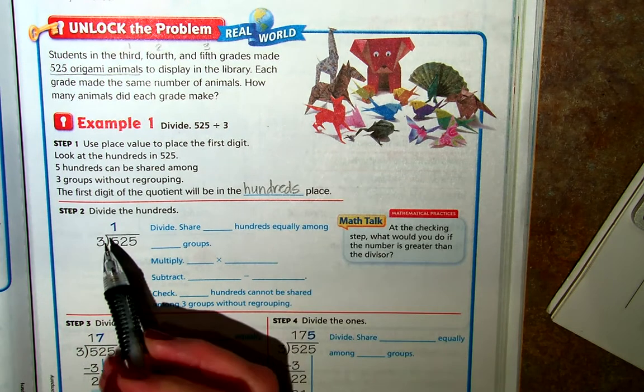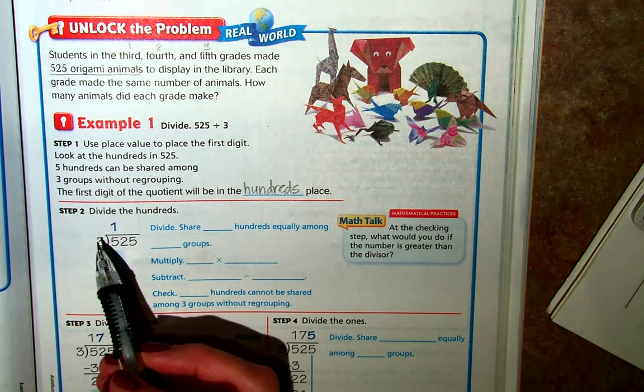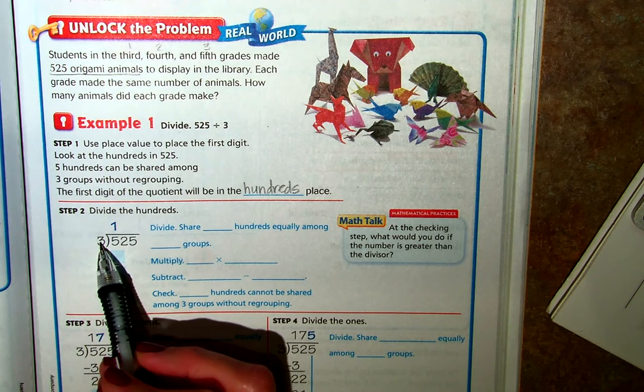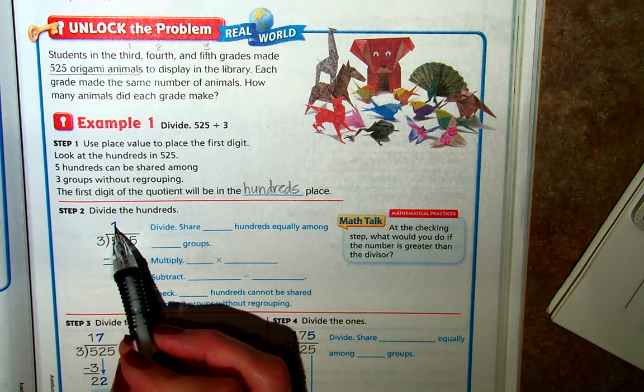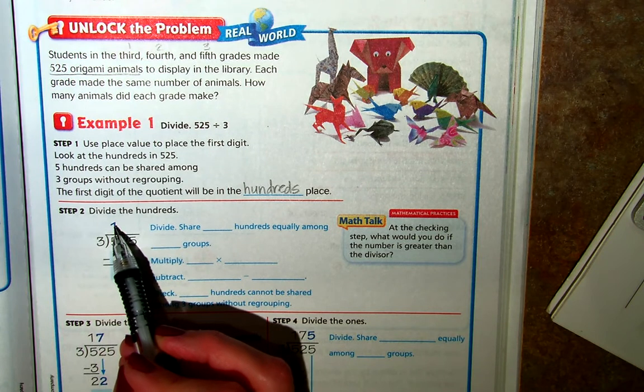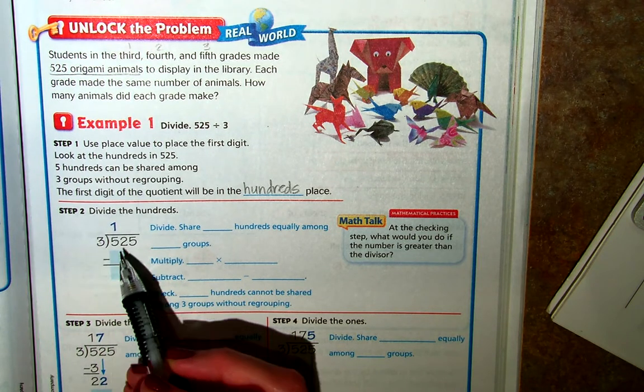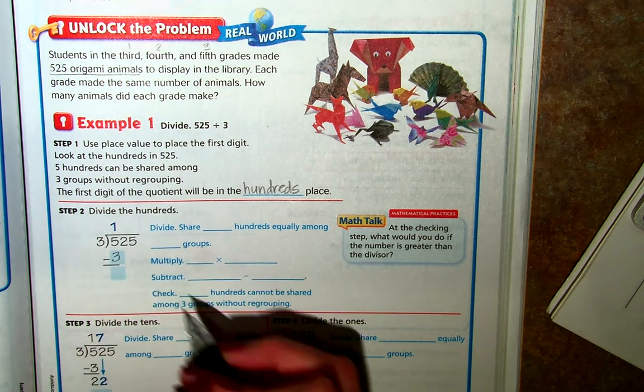Because right here we can see that 3 will go into 5 just one time, and 1 times 3 is going to be 3, and so we're going to place our 3 here. So we divide.